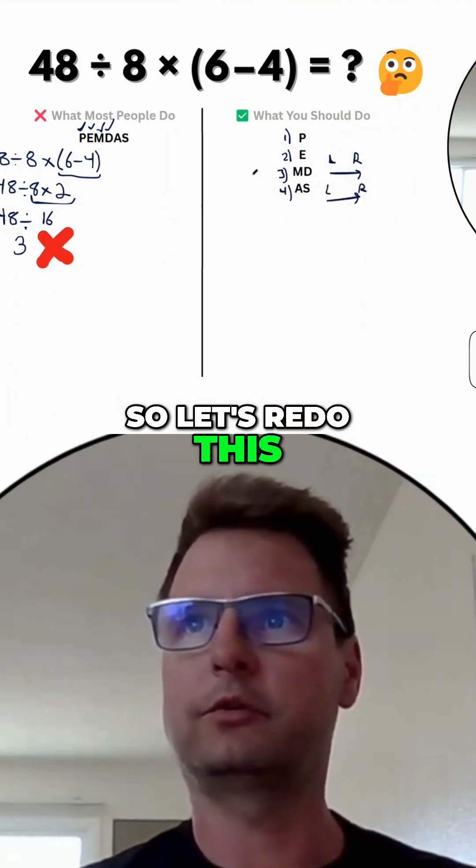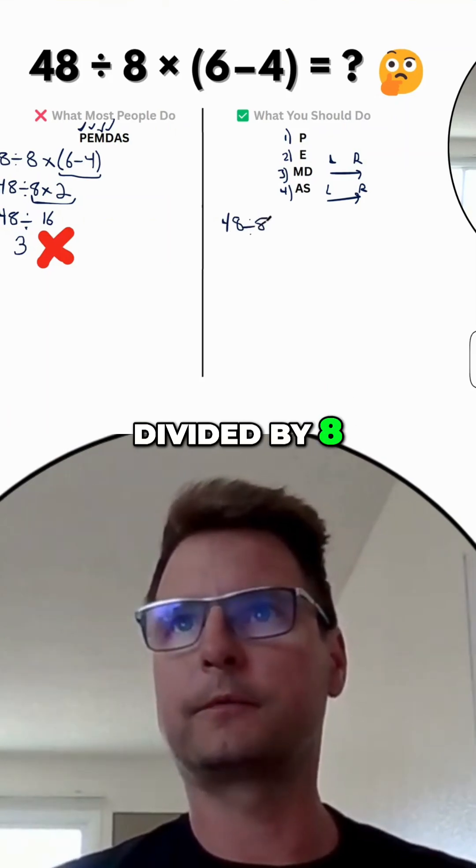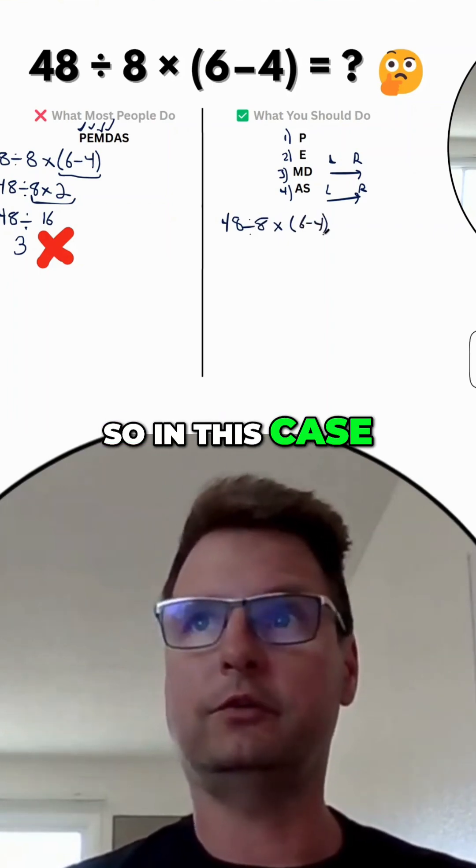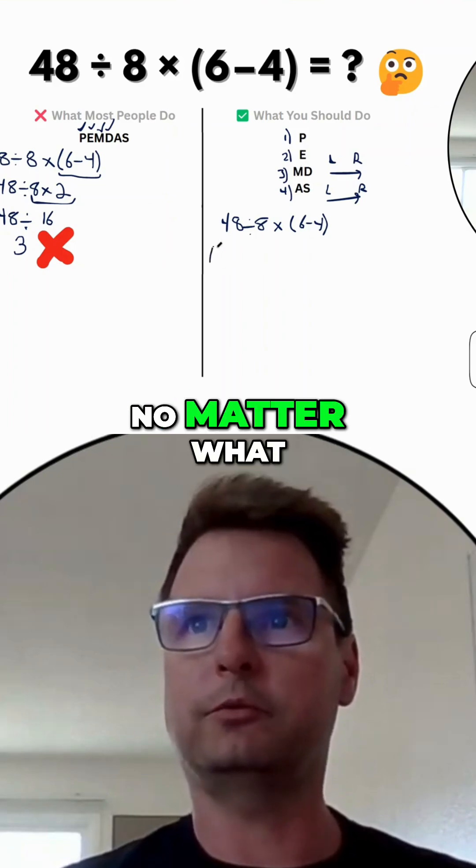So let's redo this using these rules. What do we have to start? 48 divided by 8 times in parentheses, 6 minus 4. So in this case we start off the same, right? Because parentheses comes first, no matter what.